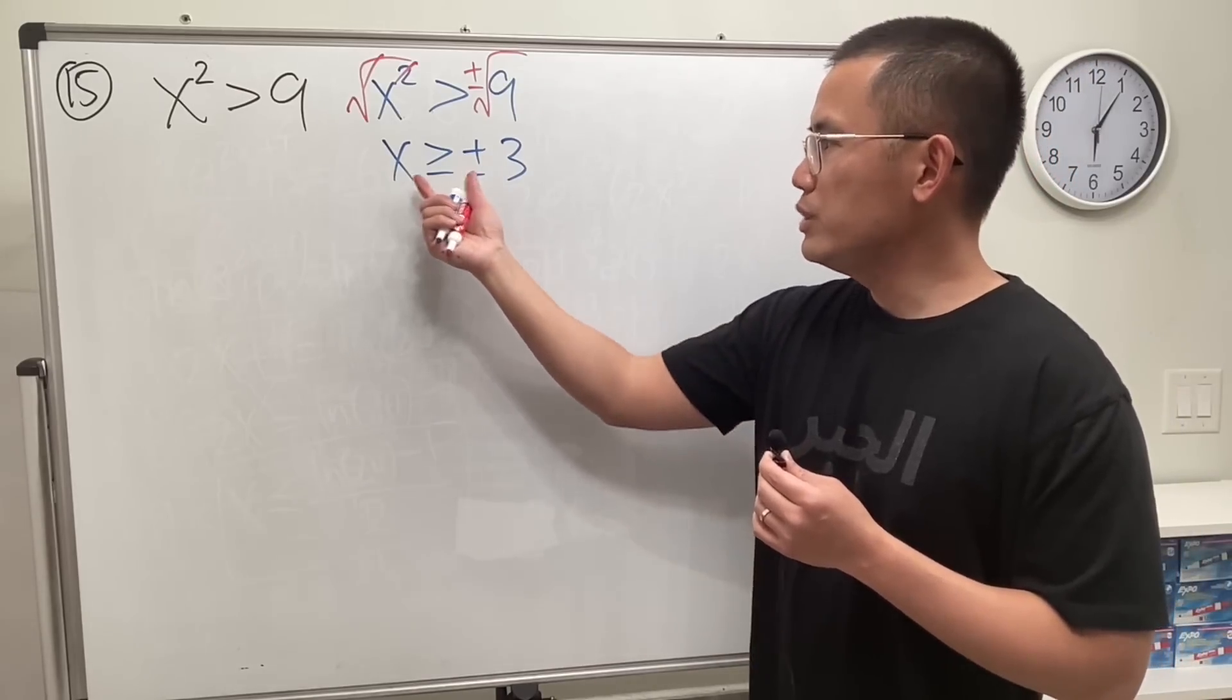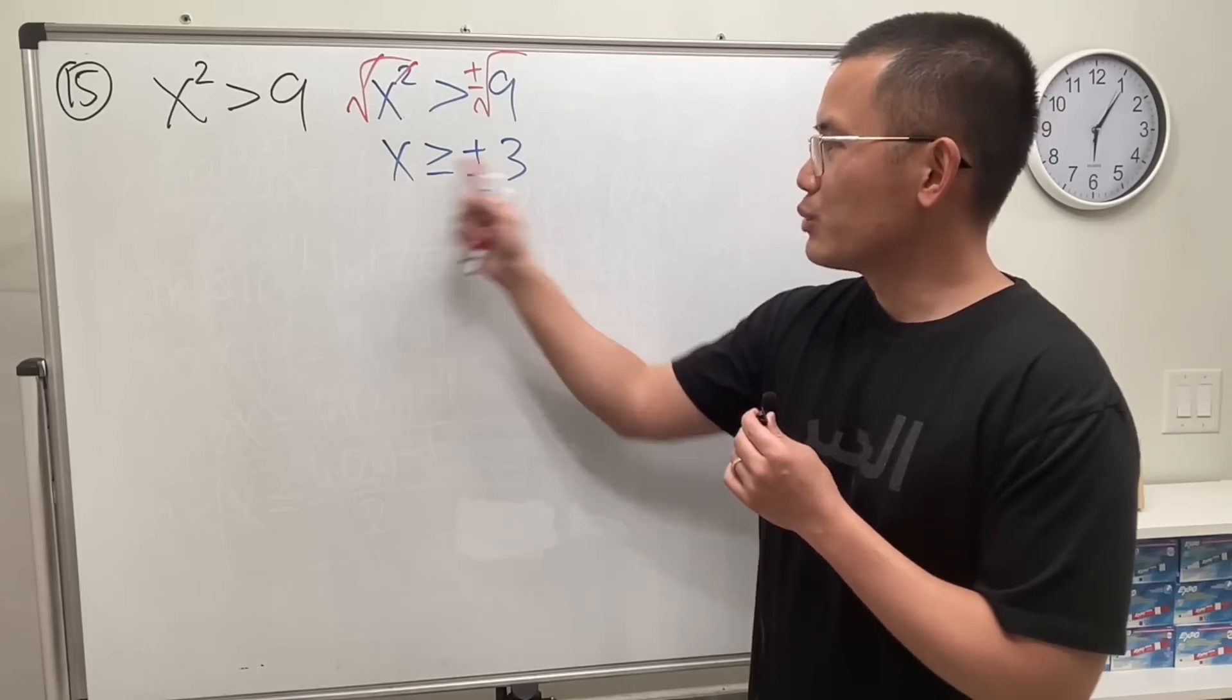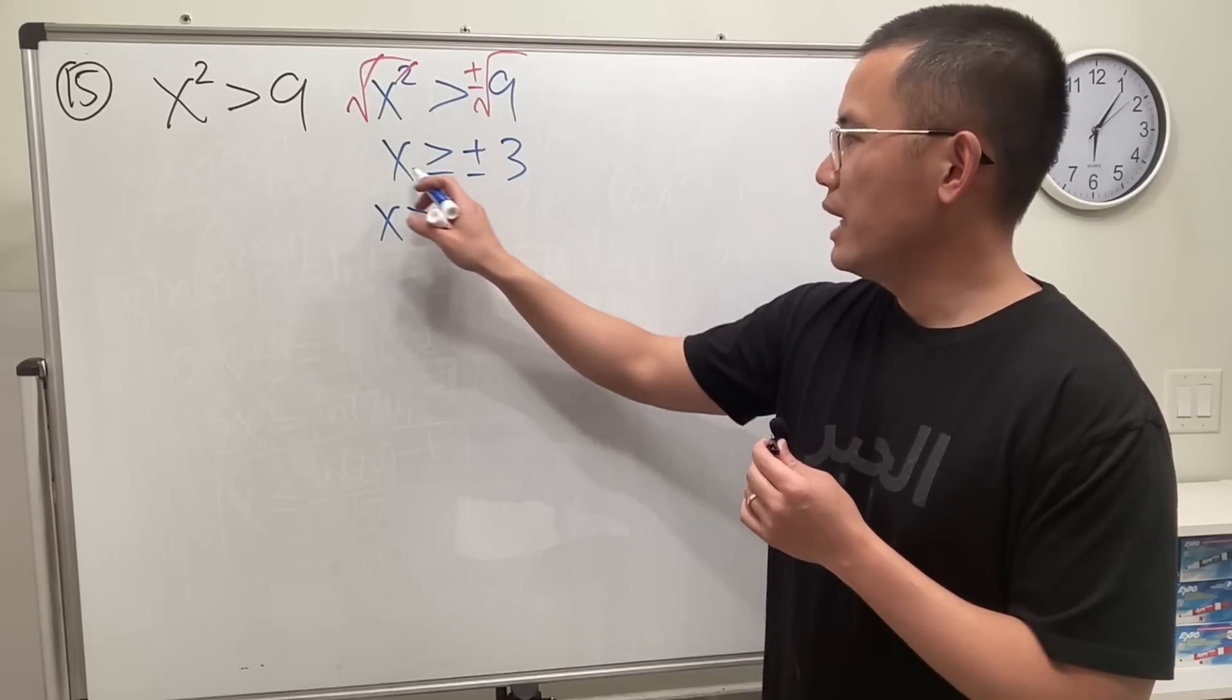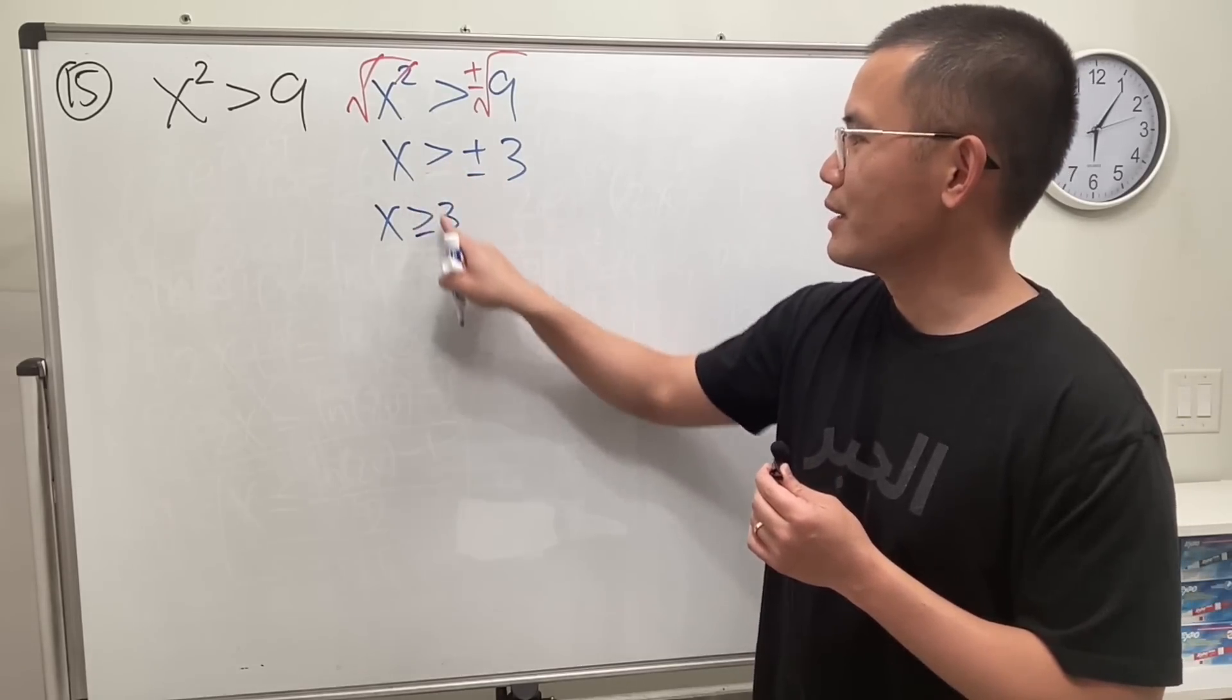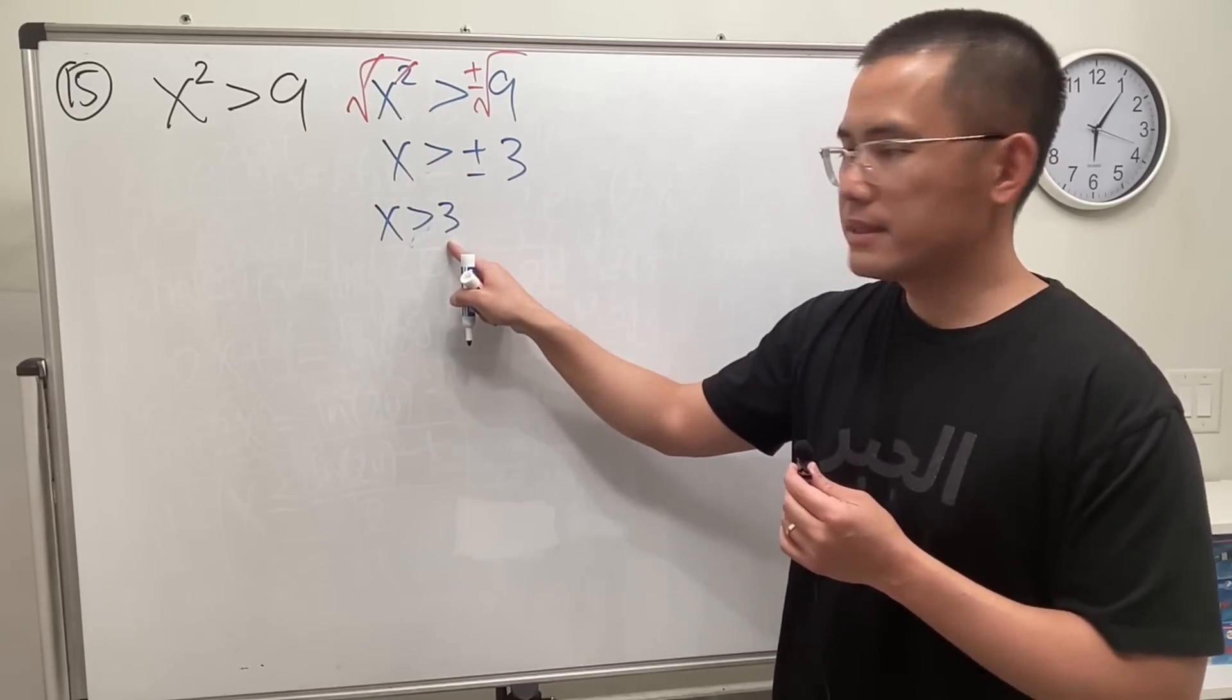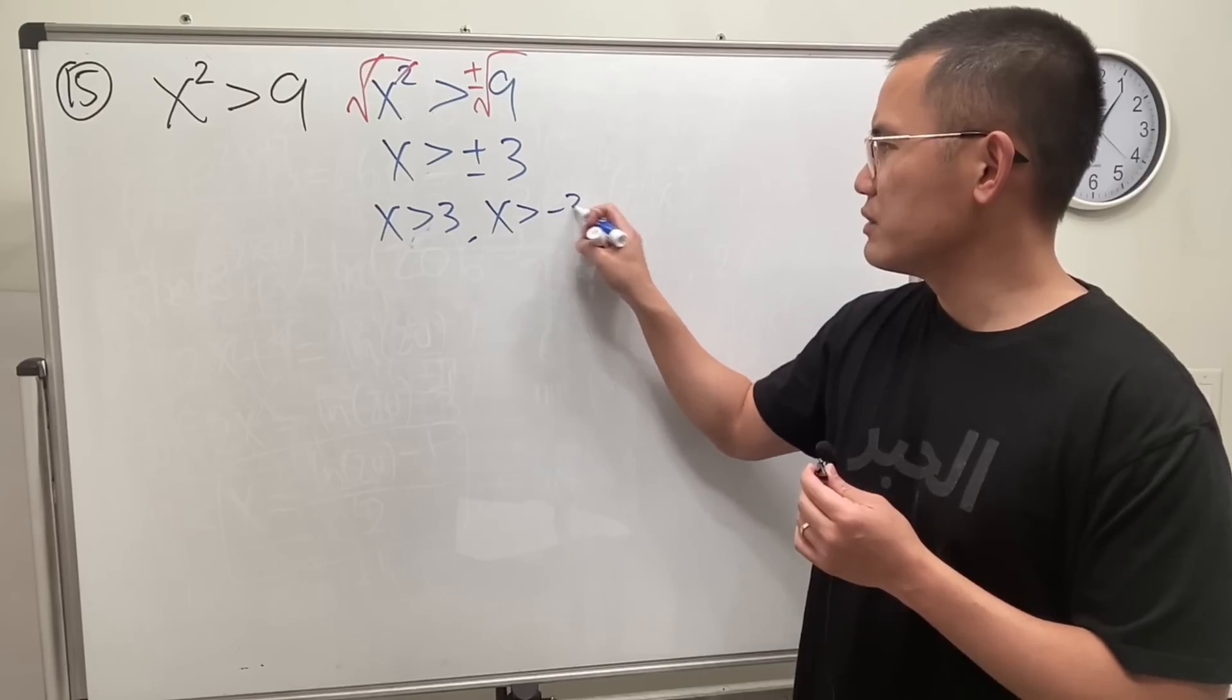Well firstly, if you really read this notation, it doesn't really make that much sense because right here we are saying x is greater than positive 3, and then also equal to—wait, there's no equal sign, I'm sorry—greater. All right, we're saying x is greater than positive 3 and another one is x is greater than negative 3.